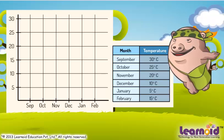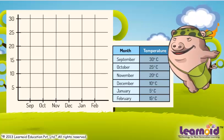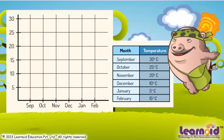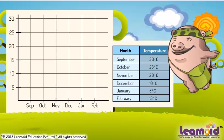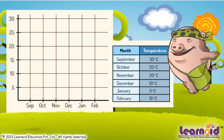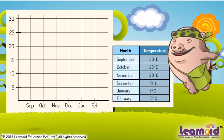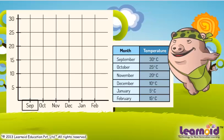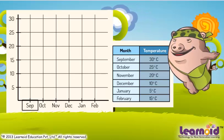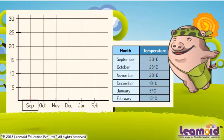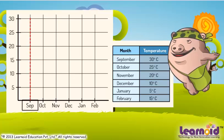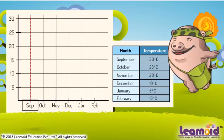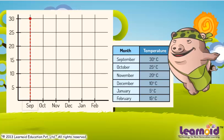Now to put the table information onto the graph. In September, the temperature was 30 degree Celsius. To indicate it on the graph, we will locate September on the horizontal axis, and then move vertically to find 30 degree Celsius and mark a dot there.